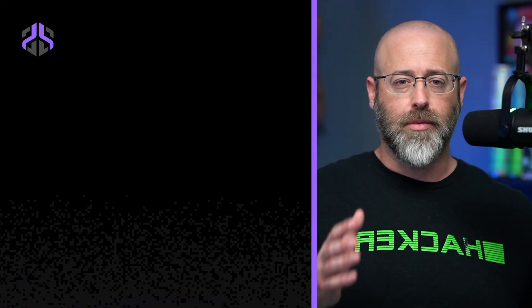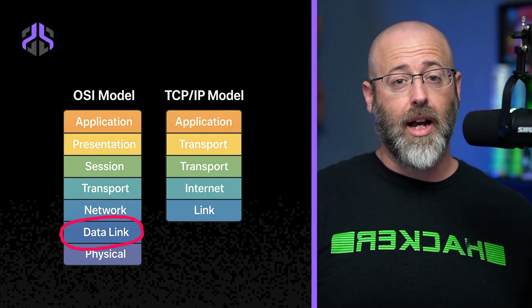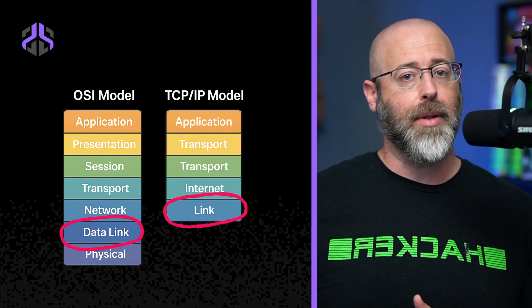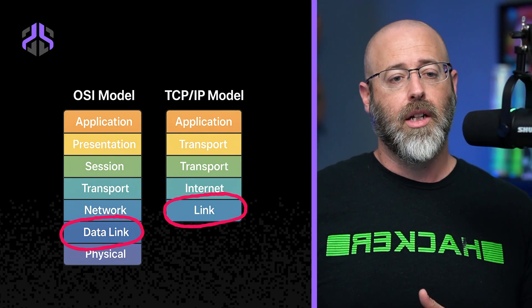If you're thinking of the TCP/IP model, that's the link layer. You've got to keep those models squared away in your head. So Layer 2 — the data link layer on OSI, or the link layer in the TCP/IP model — and that's really important to know because it's all about the MAC address stuff going on there.